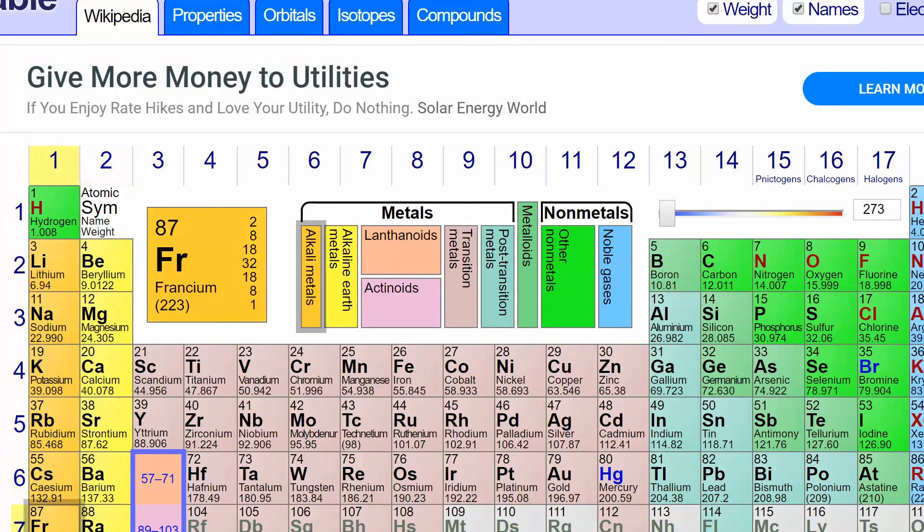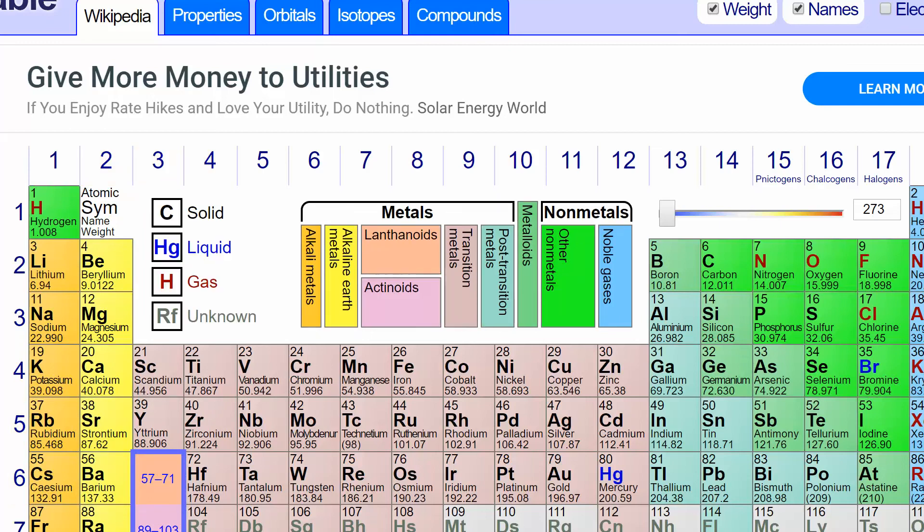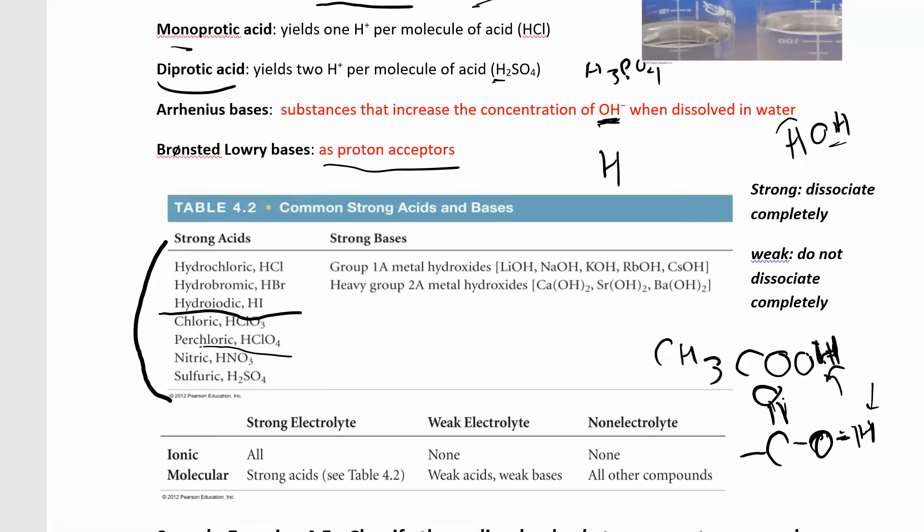And then the heavier group two. So calcium, strontium, and barium. We're not going to worry about these guys down here. Those are not very common. So calcium, strontium, barium, hydroxide. With these hydroxides in group two, remember there's two hydroxides for every one metal. So we have Ca(OH)2, that sort of thing. That's why we have those two there because they're all group two metals. They're plus two cations.